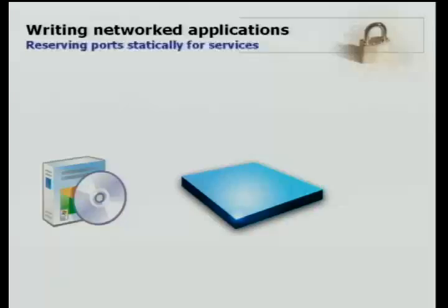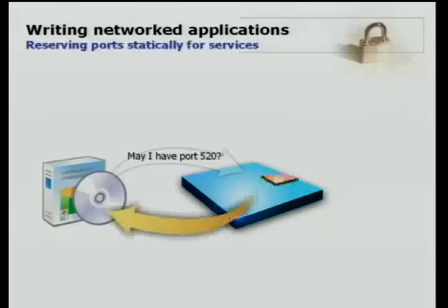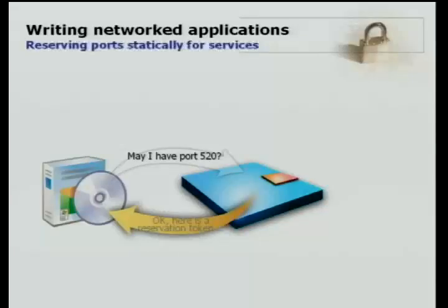So what we've done now is built APIs into the IP helper API so that you can reserve ports statically ahead of time. When you're installing an application, you can say: I need port 520 in order to run — please lock down port 520 and don't give it to anybody else, even if I'm not actually running at that time. Once the application has done that, we give back a reservation token that the application can use in conjunction with its privileges to obtain that port at runtime, bind its ports, and accept connections.